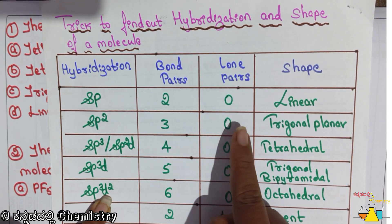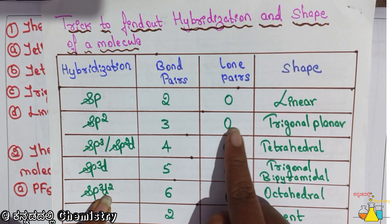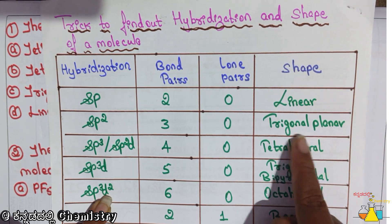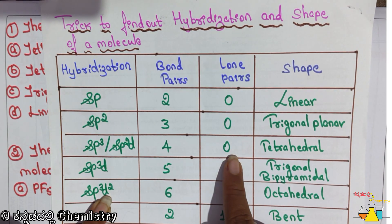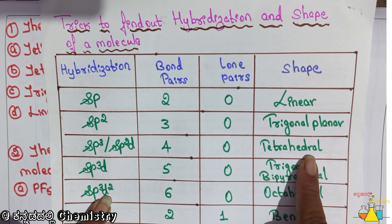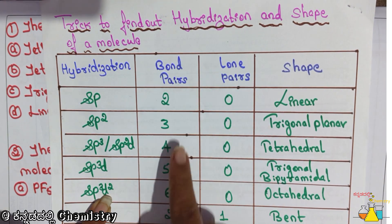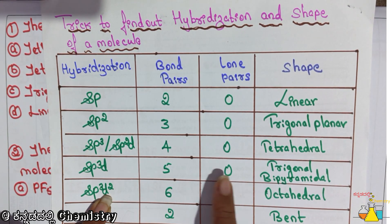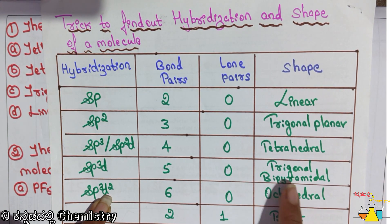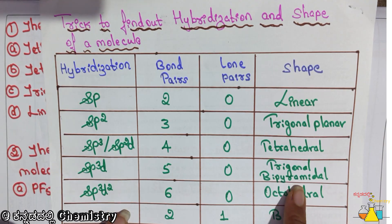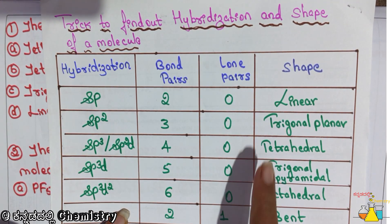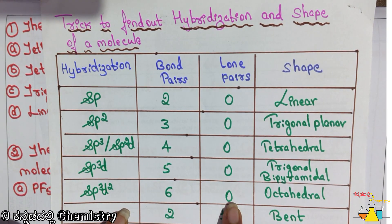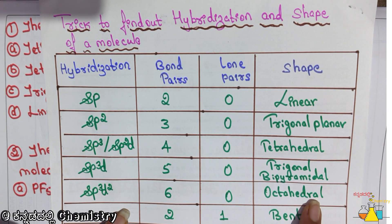3 bond pairs, 0 lone pairs — it's trigonal planar. 4 bond pairs, 0 lone pairs — it's tetrahedral. 5 bond pairs, 0 lone pairs — it's trigonal bipyramidal. And 6 bond pairs, 0 lone pairs — it's octahedral.